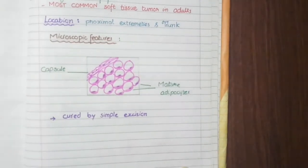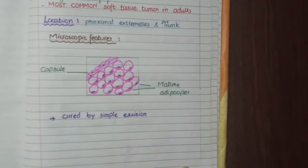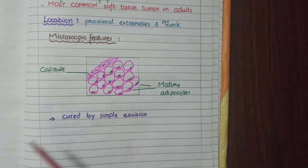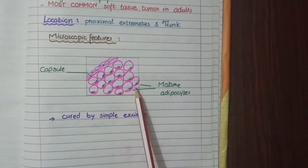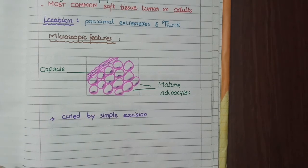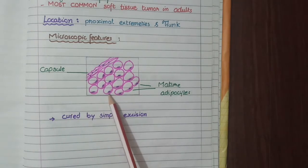Let's look at the microscopic features of lipoma. As lipoma is a benign tumor, it is composed of an increased number of cells that are mature adipocytes. These mature adipocytes are identified by their signet ring morphology — they have a central empty cytoplasm. The cytoplasm is empty due to lipid-laden vacuoles, and due to the accumulation of fat in the cytoplasm, the nucleus is pushed to the margins. This appearance is called signet ring morphology.